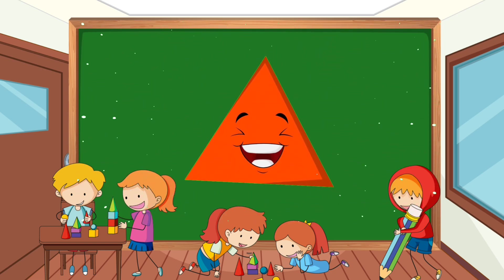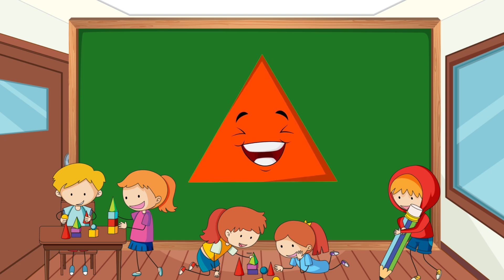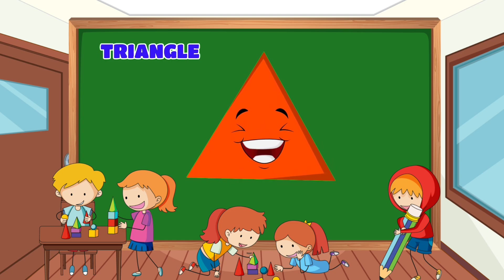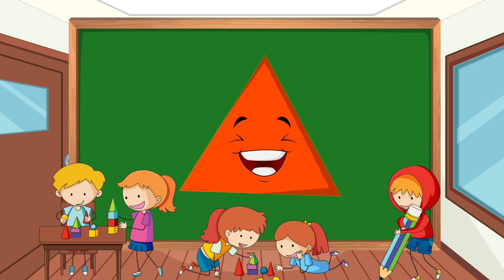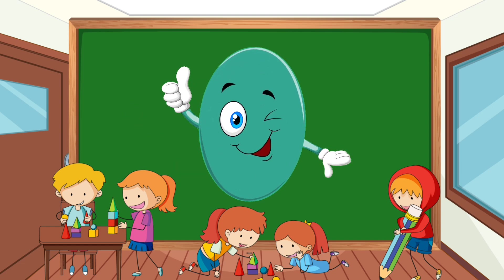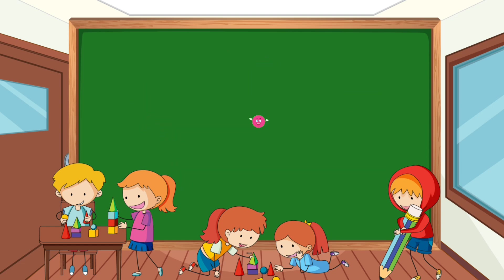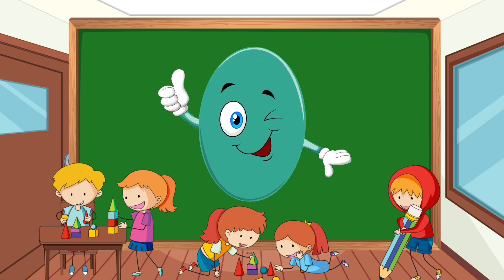I'm a triangle with three sides, three straight sides. I'm a triangle with three sides, three straight sides. I'm a triangle with three sides and a pointy head. Triangle, rectangle, circle, oval, square. Triangle, rectangle, circle, oval, square.